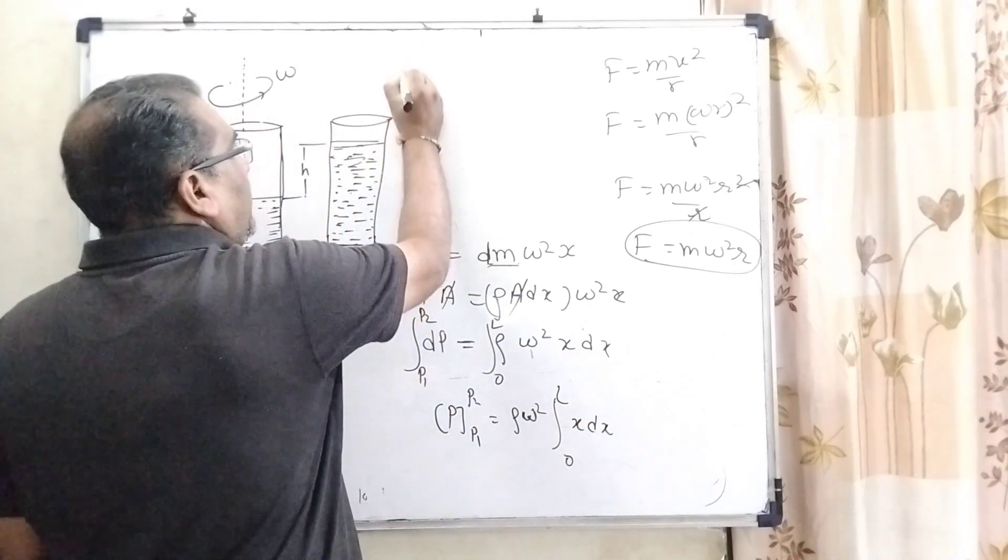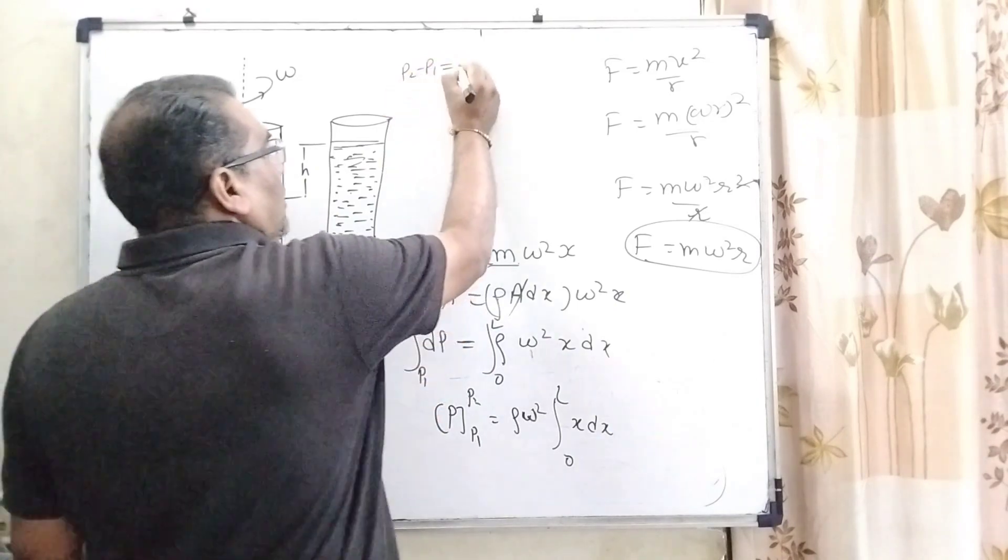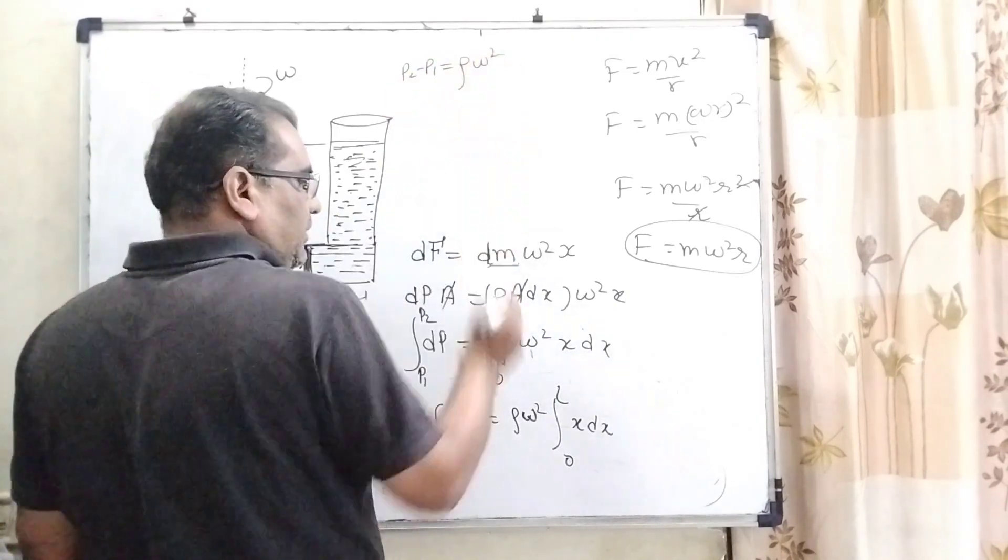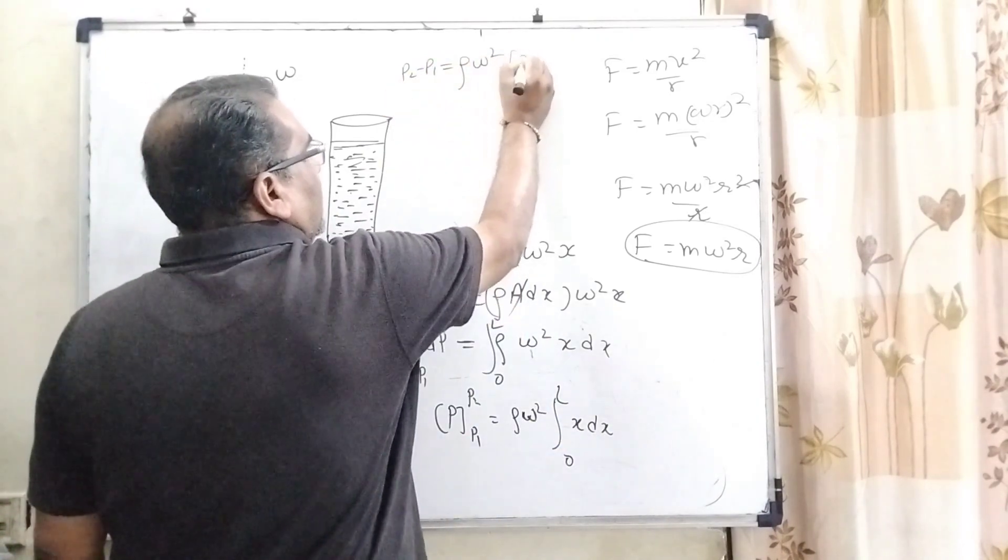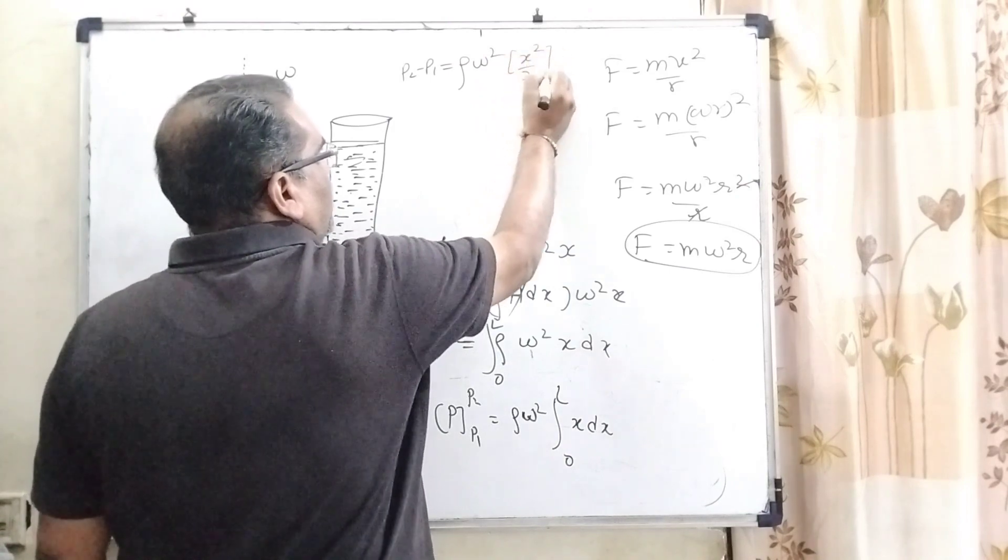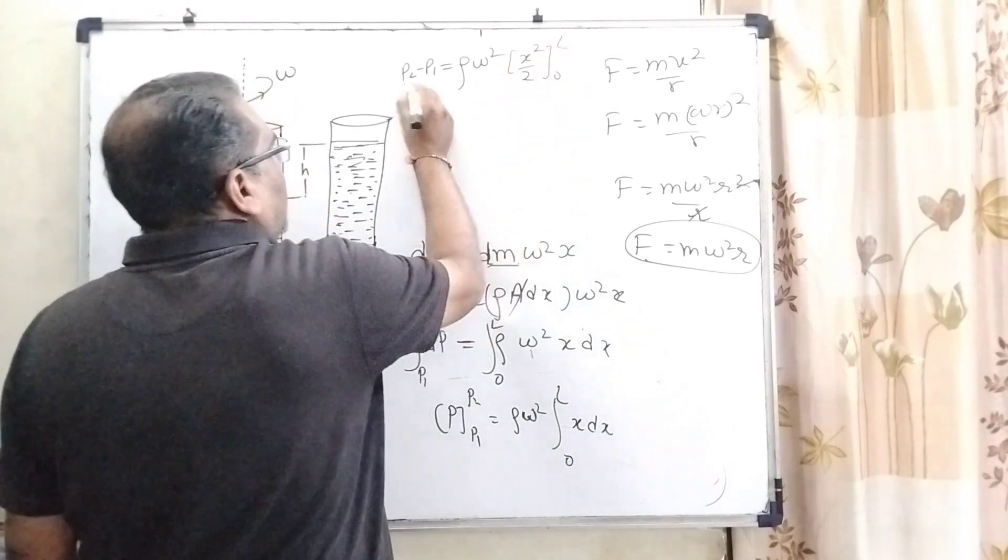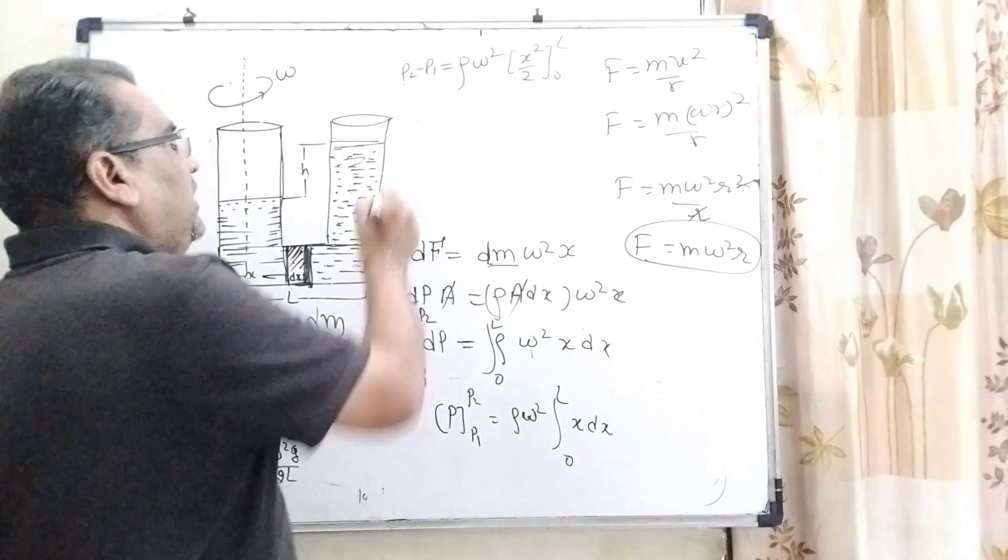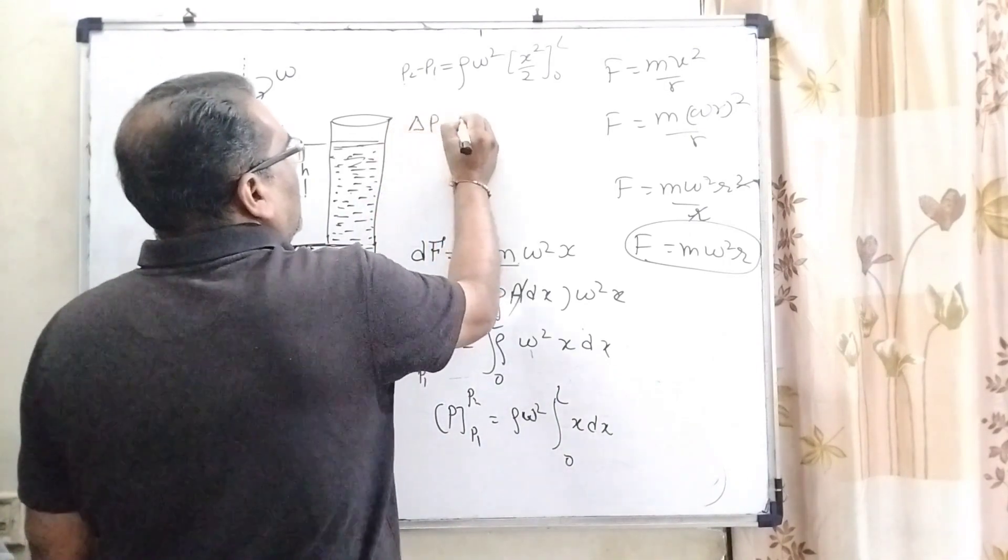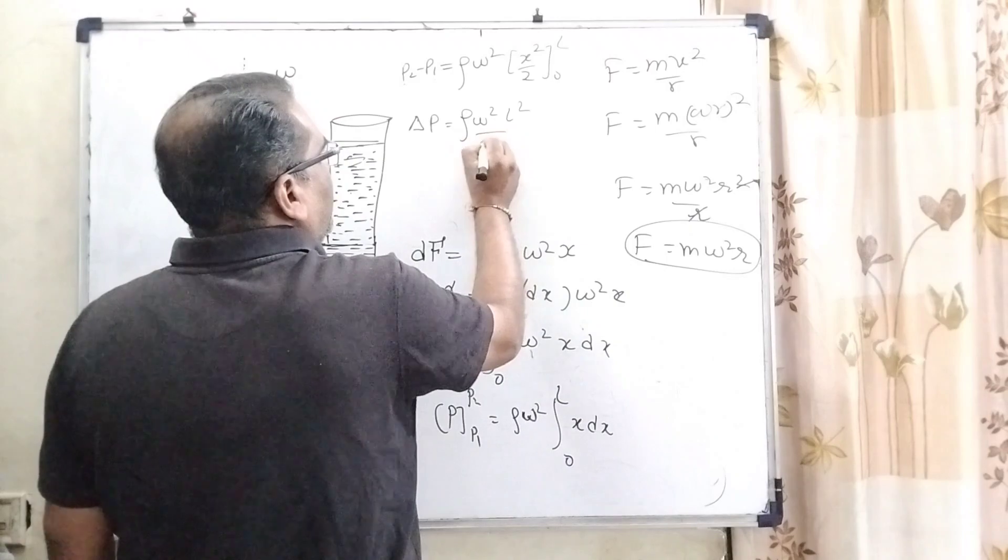So here, P2 minus P1 equals rho omega square, integration of x is x square by 2, 0 to L. Here, P2 minus P1 is delta P equals rho omega square L square by 2.